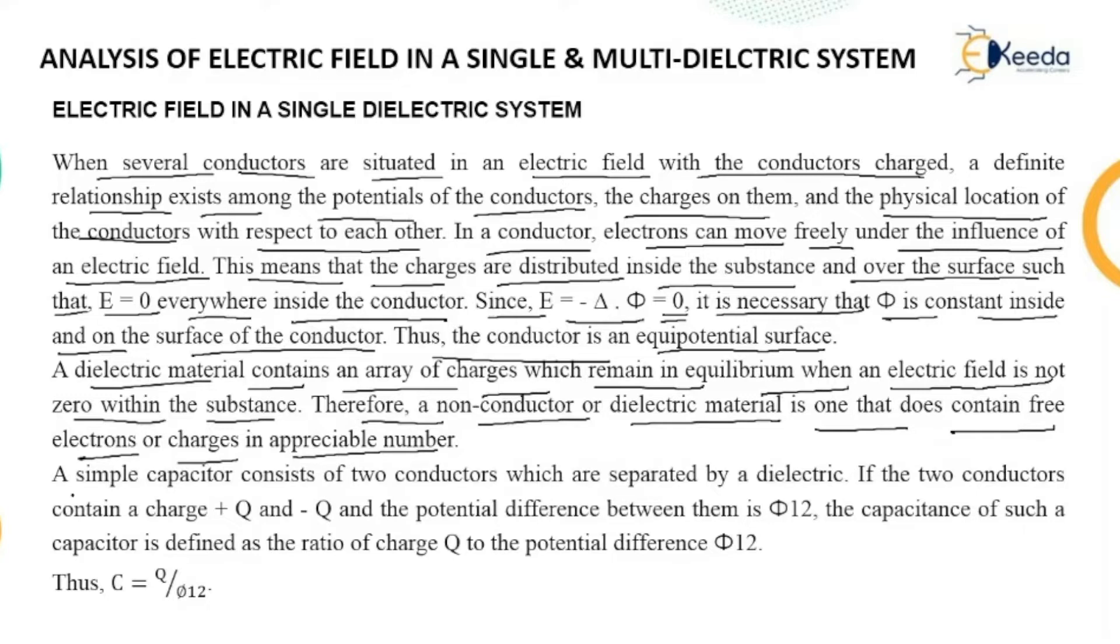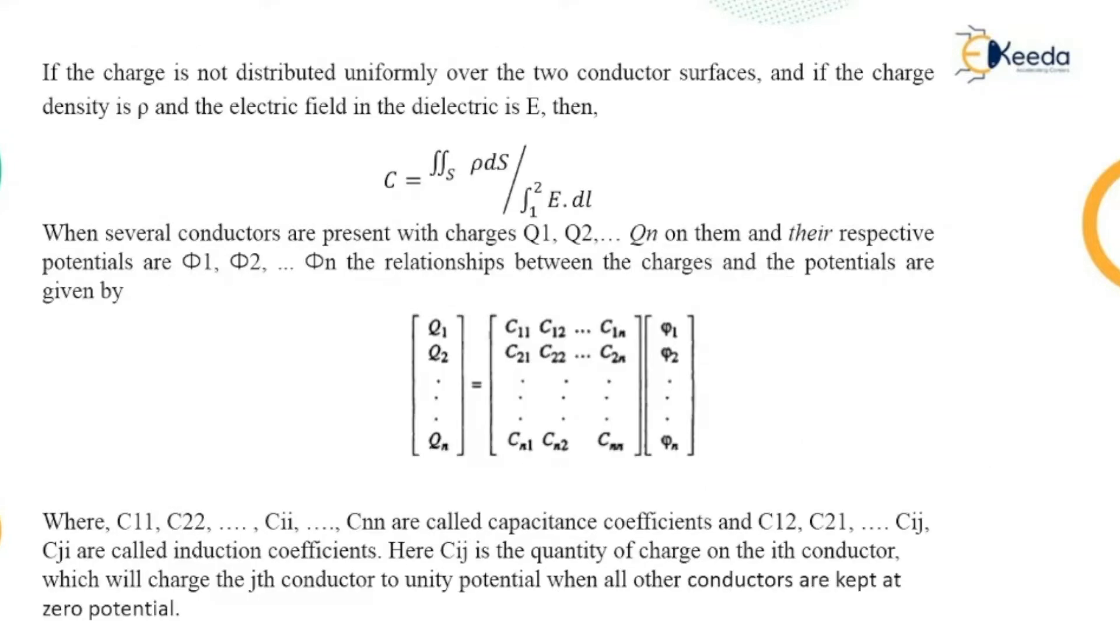A simple capacitor consists of two conductors, which are separated by a dielectric. If the two conductors contain charges +Q and -Q, and the potential difference between them is φ₁₂, the capacitance of such a capacitor is defined as the ratio of charge Q to the potential difference φ₁₂. So C = Q/φ₁₂.